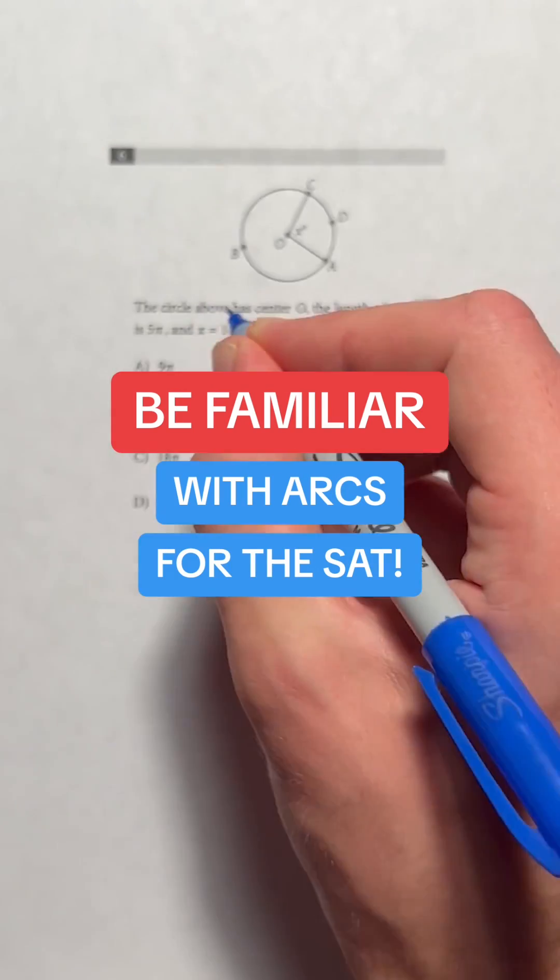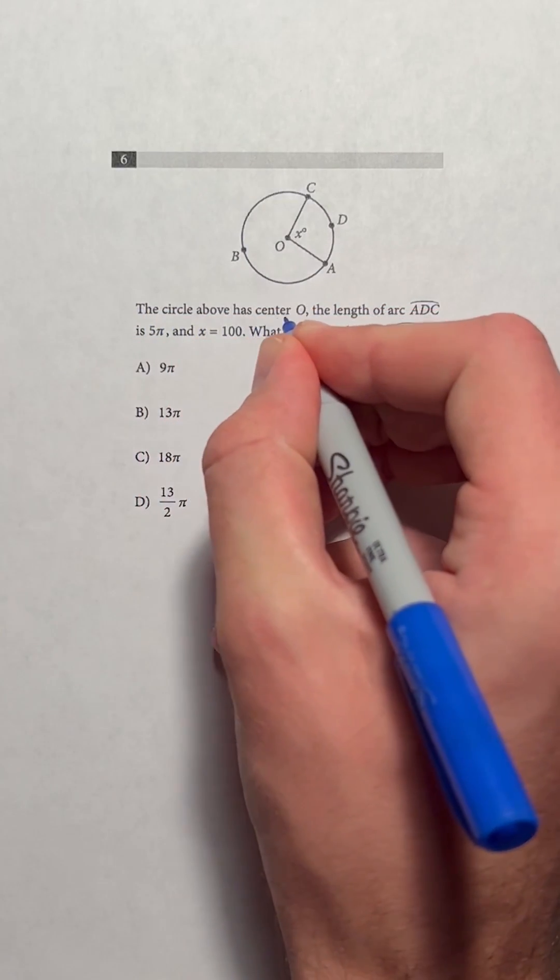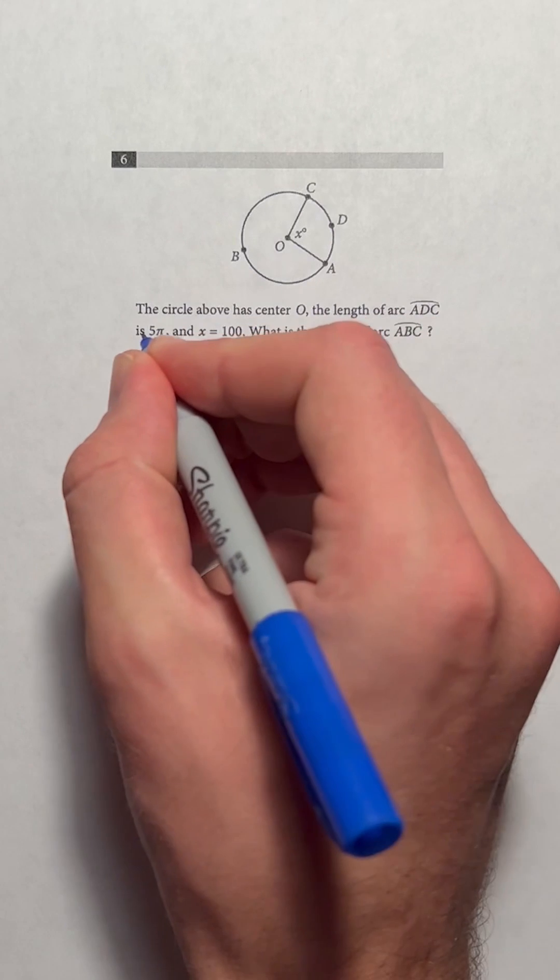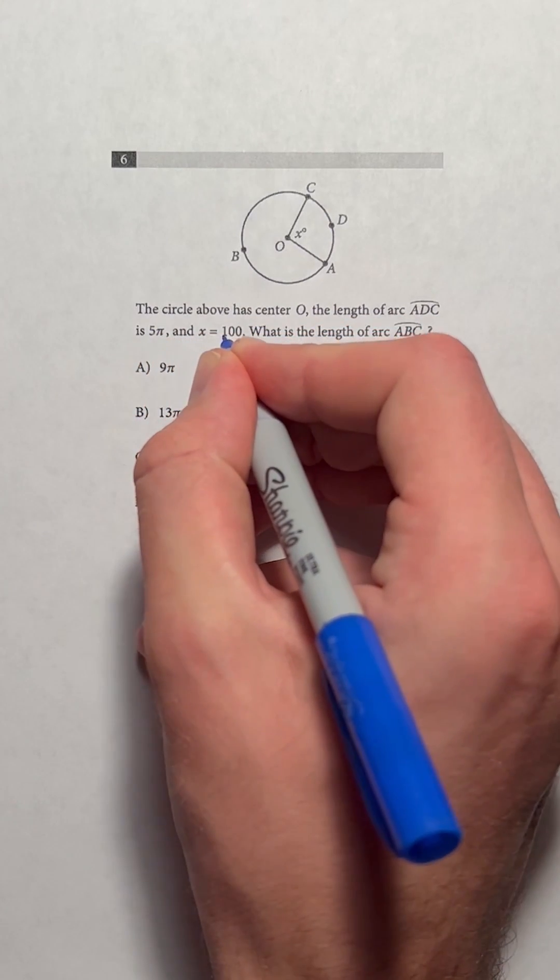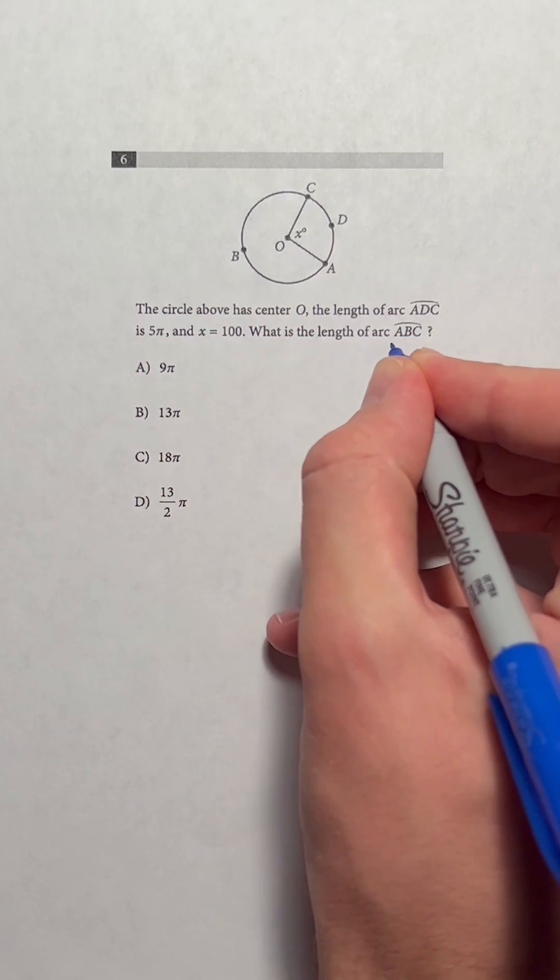Be familiar with arcs for the SAT. The circle above has center O. The length of arc ADC is 5π and x equals 100. What is the length of arc ABC?